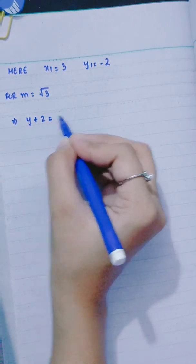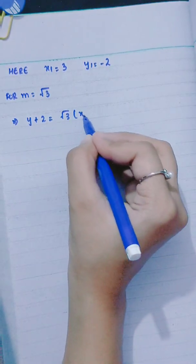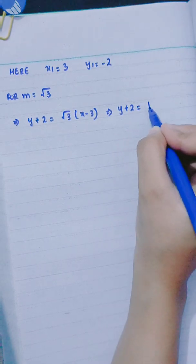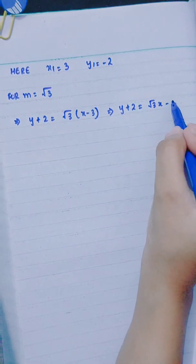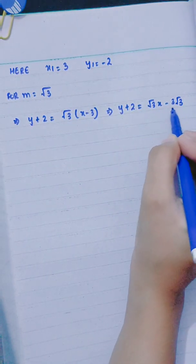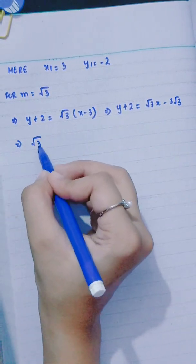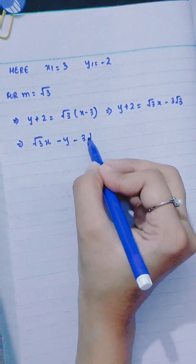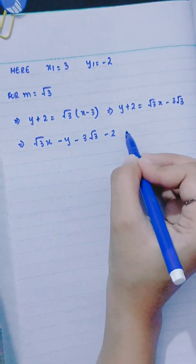y + 2 = √3(x - 3), so y + 2 = √3x - 3√3. The equation is √3x - y - 3√3 - 2 = 0.